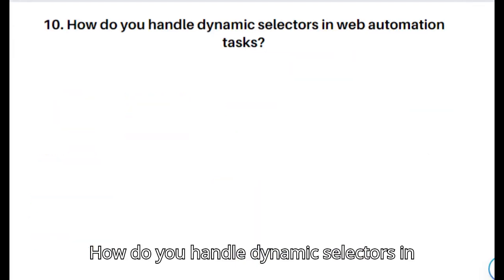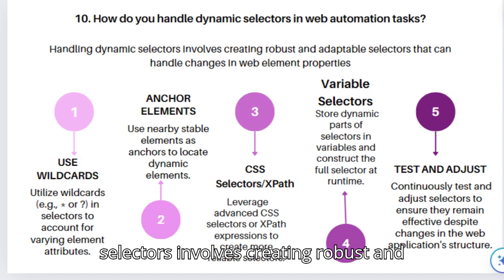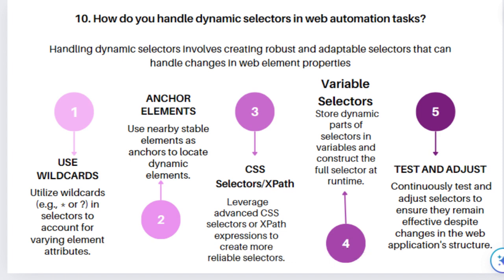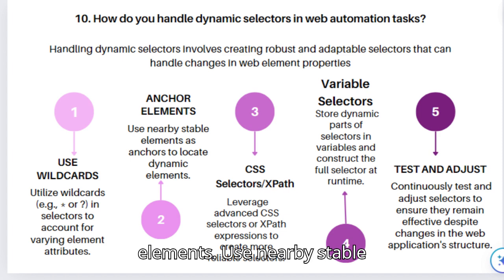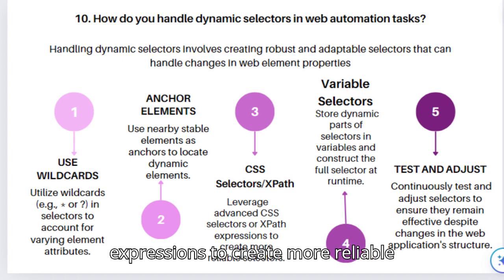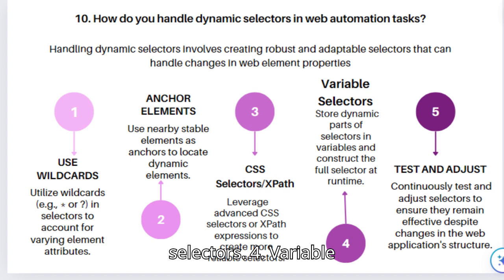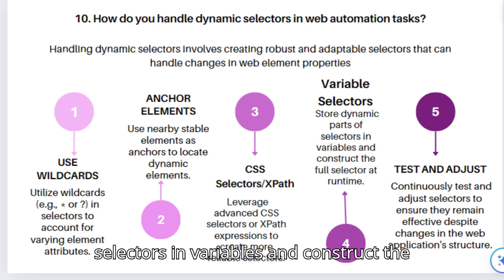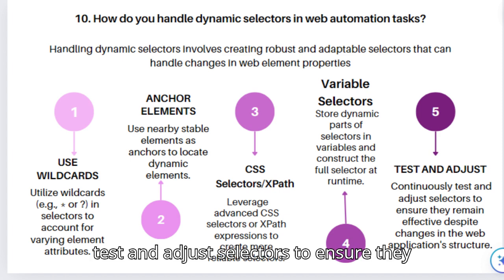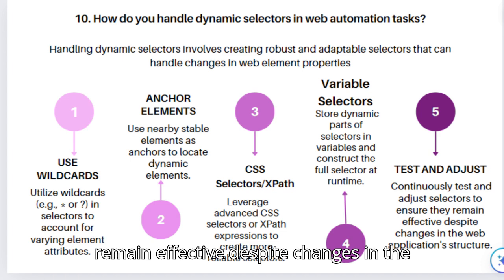Question 10: How do you handle dynamic selectors in web automation tasks? Handling dynamic selectors involves creating robust and adaptable selectors that can handle changes in web element properties: 1. Use wildcards (e.g., asterisk) in selectors to account for varying element attributes. 2. Anchor elements: use nearby stable elements as anchors to locate dynamic elements. 3. CSS selectors or XPath: leverage advanced CSS selectors or XPath expressions to create more reliable selectors. 4. Variable selectors: store dynamic parts of selectors in variables and construct the full selector at runtime. 5. Continuously test and adjust selectors to ensure they remain effective despite changes in the web application structure.